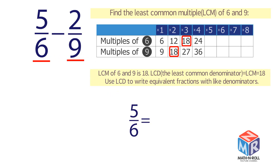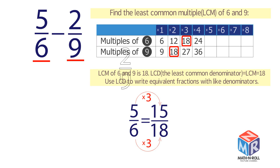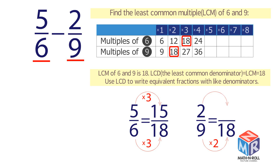Use the least common denominator to write equivalent fractions with like denominators. Remember, in order to find the equivalent fraction, you need to multiply both parts — the numerator and the denominator — by the same number. The equivalent fraction of 5 sixths is 15 over 18. The equivalent fraction of 2 ninths is 4 over 18.